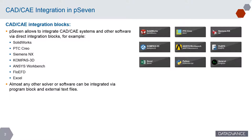Basically there are two types of integration. The first one is the direct integration blocks for CAD, CAE and other software. For example, there are direct integration blocks for SOLIDWORKS, PTC CREO, Siemens NX, Compass 3D, ANSYS Workbench, FlowEFD and Excel.